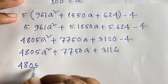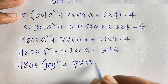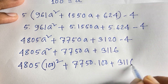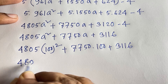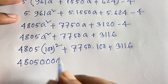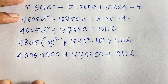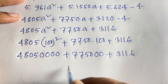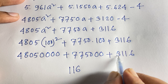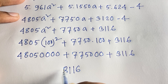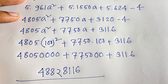Substituting a equals 100: 4805 times 100 squared is 4805 times 10000 equals 48,050,000. Then 7750 times 100 is 775,000. Adding 3116. The final answer is 48,050,000 plus 775,000 plus 3,116 equals 48,828,116. This is our final answer.